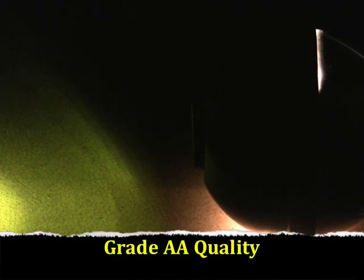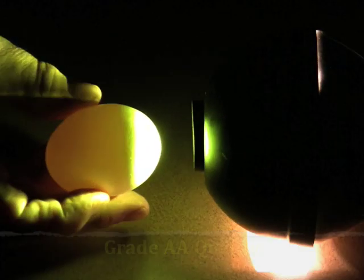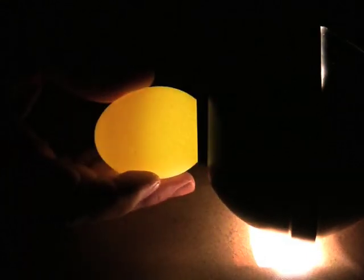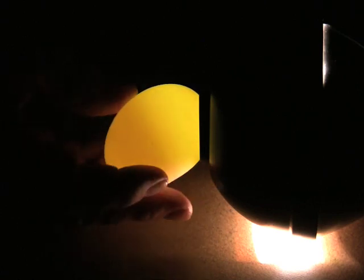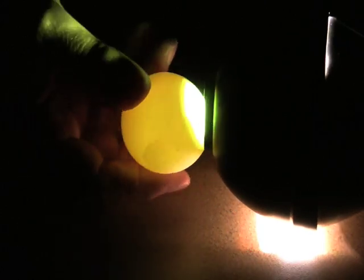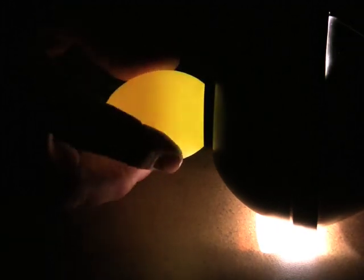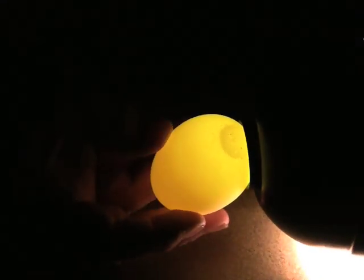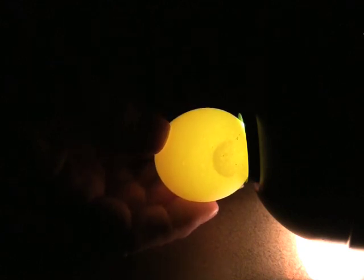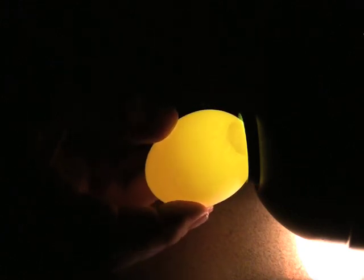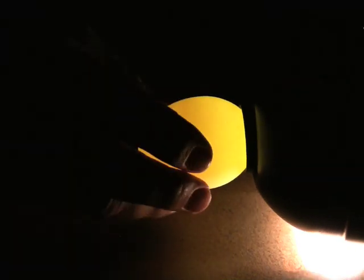This is Grade AA Quality. To properly candle an egg, we take the egg and put the large side straight into the aperture where the light is coming out. We never turn the egg on its side because you cannot see the air cell. This is the proper technique, and you can clearly see the air cell. Because this air cell is very small, one-eighth of an inch or less in depth, it is a AA quality egg.